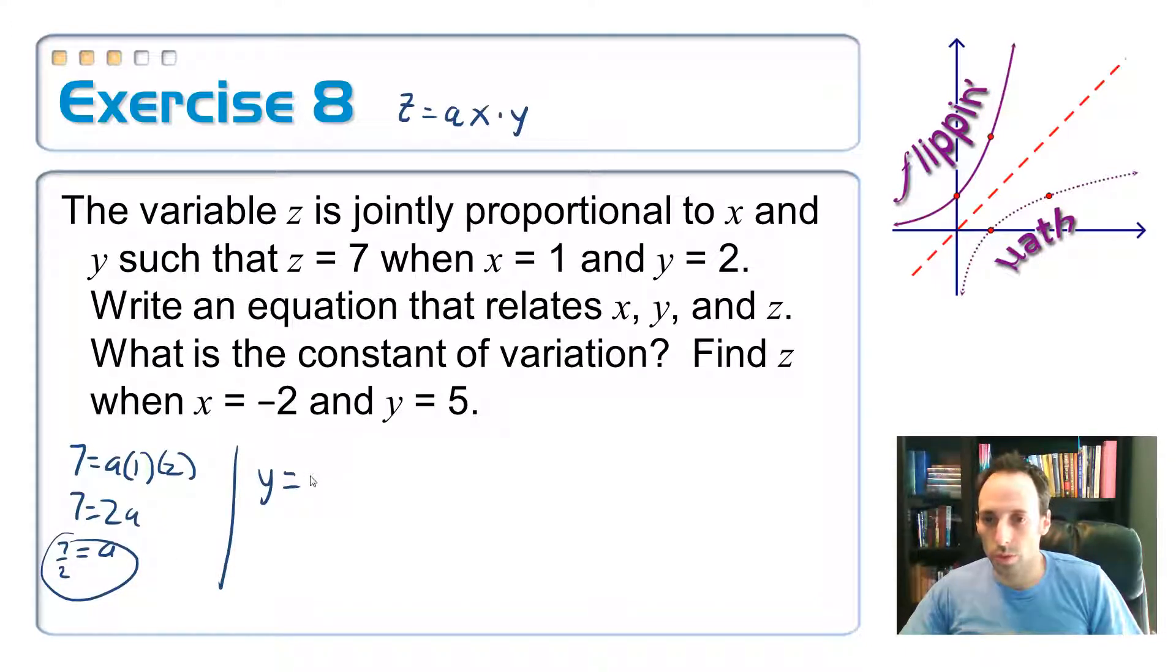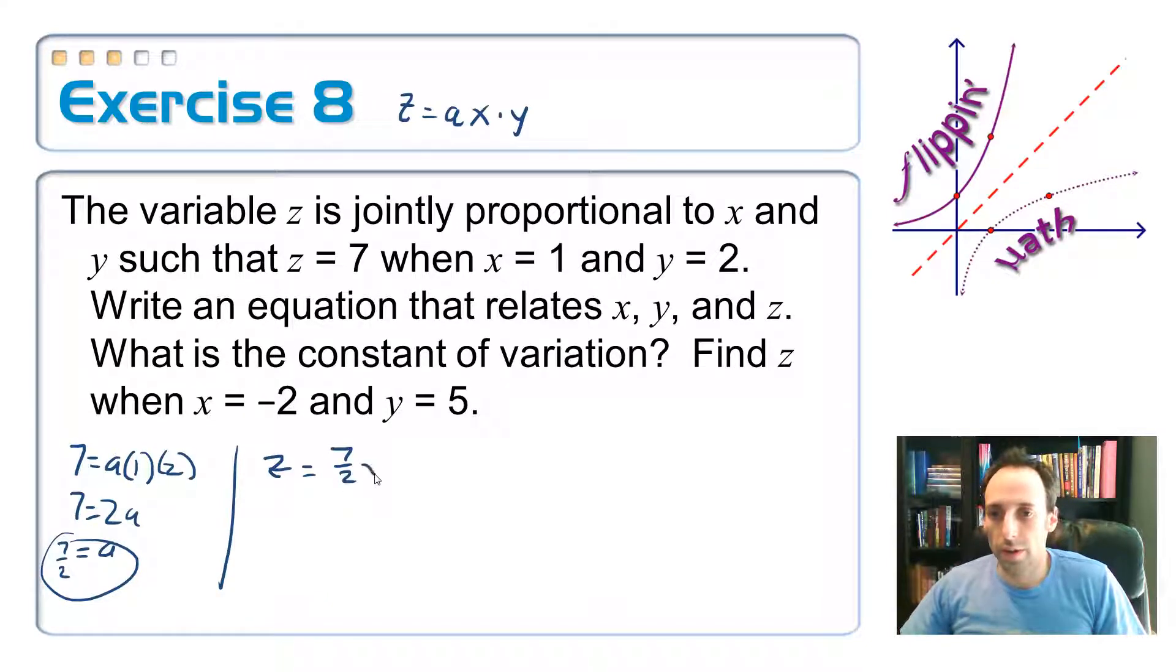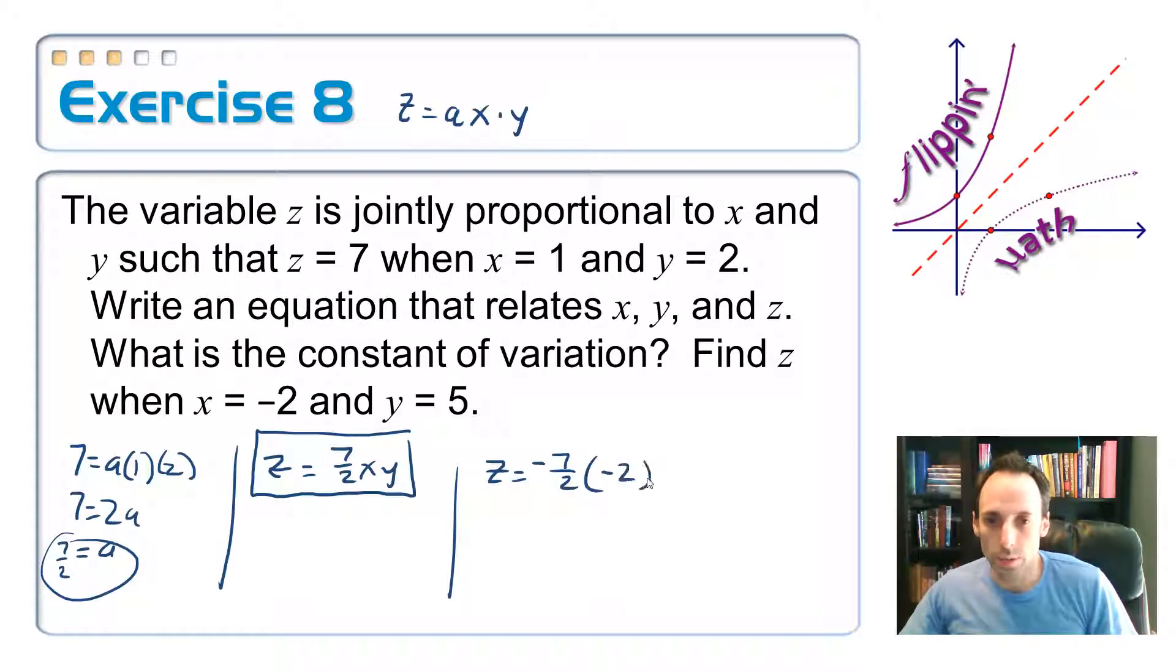There's the constant of variation. My equation is z equals 7 halves xy. Could you have put 3.5 in there? Sure. Could you have put 2.5 in there? No, because that's not the same. Anyway, last part of this, z is equal to, what is z equal to when x is equal to negative 2 and y is equal to 5? So z equals 7 halves times negative 2 times 5. Now this 2 down here can cancel with that 2. Don't forget I still have a negative sign up there. And then I have the 5. So 7 times negative 1 times negative 5 is negative 35. Easy.